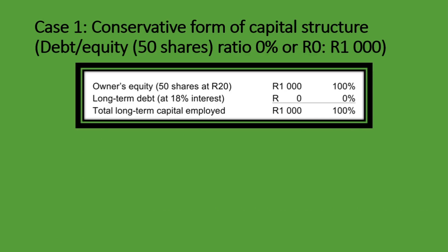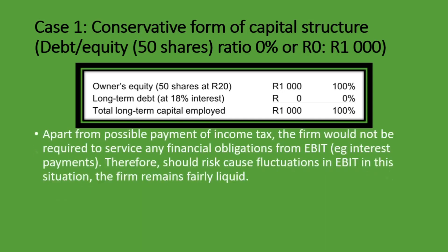Let's see the effect of this on profitability and earnings per share. Apart from the possible payment of income tax, the firm would not be required to service any financial obligations from earnings before interest and tax — that is, interest payments. We don't have to pay any interest payments because we have no long-term debt at all. Therefore, should risks cause fluctuations in EBIT, the firm would remain fairly liquid because we have no obligations in terms of interest payments.